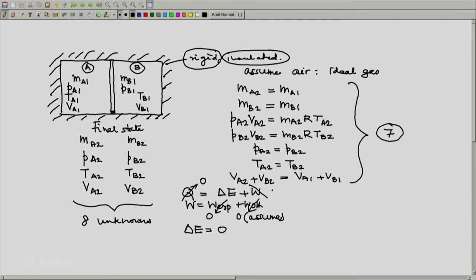That gives us delta E equals 0. And if we write this as delta U plus delta E other, then delta U can be related to temperature. But let us assume again that delta E other is 0.